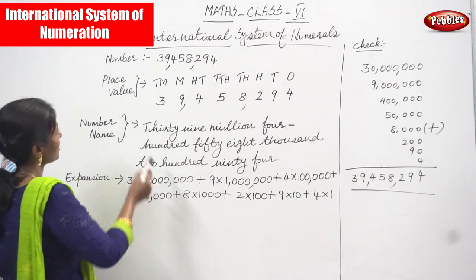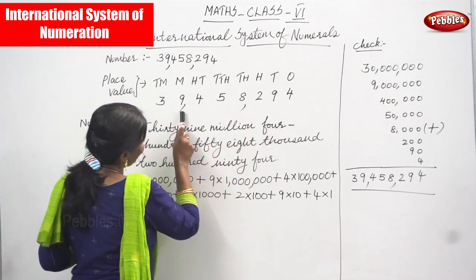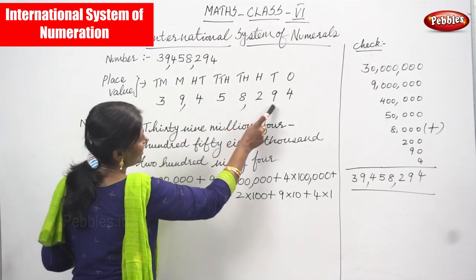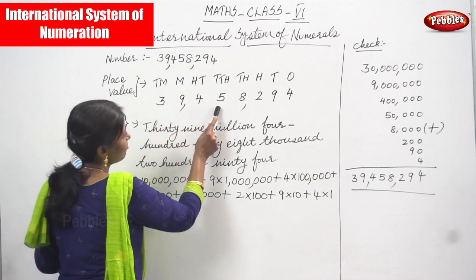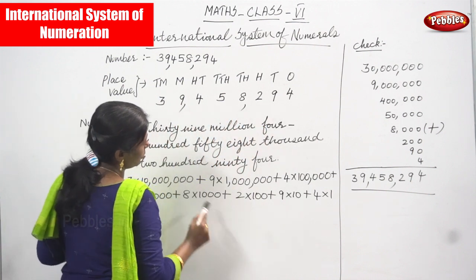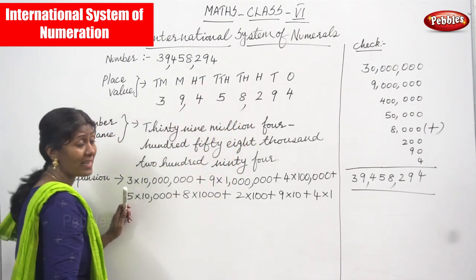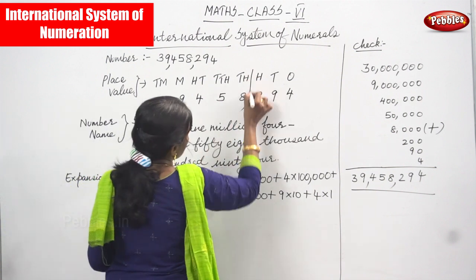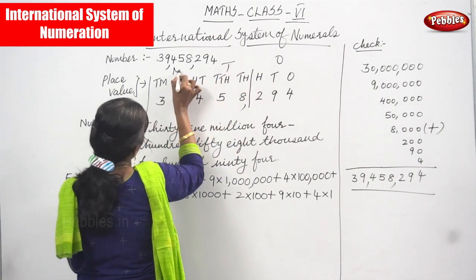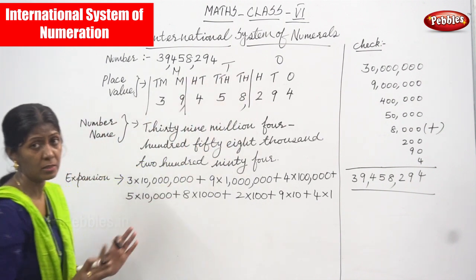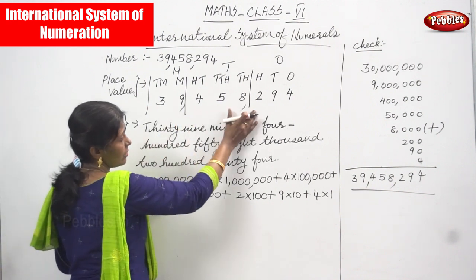So how are we going to read the number? The number is 39,458,294. I'll repeat: thirty-nine million, four hundred fifty-eight thousand, two hundred and ninety-four. The ones place covers the last three digits, the thousands place covers the next three digits, and the remaining digits are in the millions place. This is the exact segregating method.